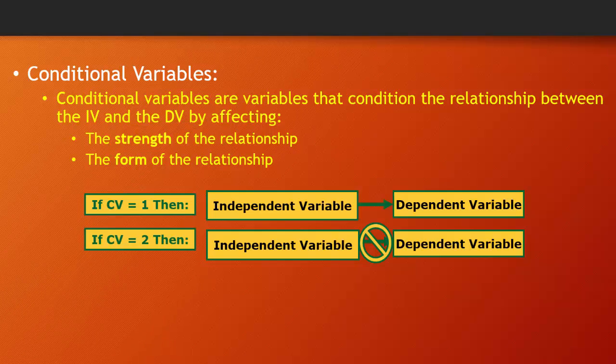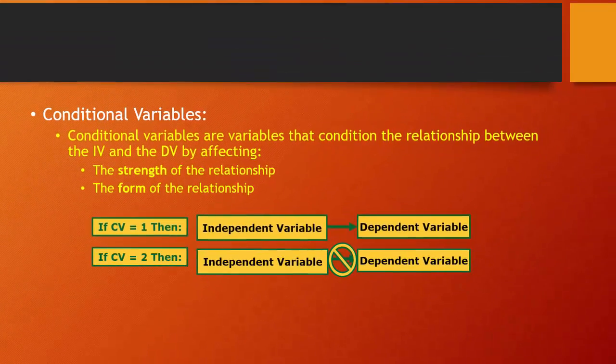Conditional variables are variables that literally condition the relationship between the independent and dependent variable. They can affect the strength of the relationship between the independent and dependent variable, i.e. how well do values of the independent variable predict values of the dependent variable. And they can also affect the form of the relationship between the independent and dependent variable, i.e. which values of the dependent variable tend to be associated with which values of the independent variable. So to identify plausible conditional variables, you have to ask yourself whether there's some sorts of people who are likely to take a particular value on the dependent variable regardless of their value on the independent variable. Now let's note that the focus is always on how the hypothesized relationship is affected by different values of the conditional variable.